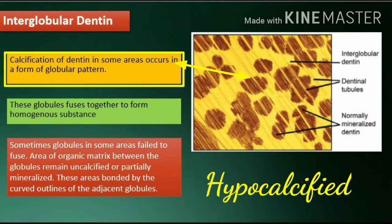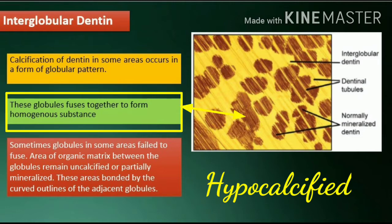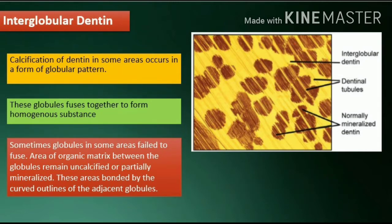Interglobular dentin: calcification of dentin in some areas occurs in a form of globular pattern. These globules fuse together to form a homogeneous substance. Sometimes globules in some areas fail to fuse, and areas of organic matrix between the globules remain uncalcified or partially mineralized. These areas are bounded by the curved outlines of the adjacent globules.